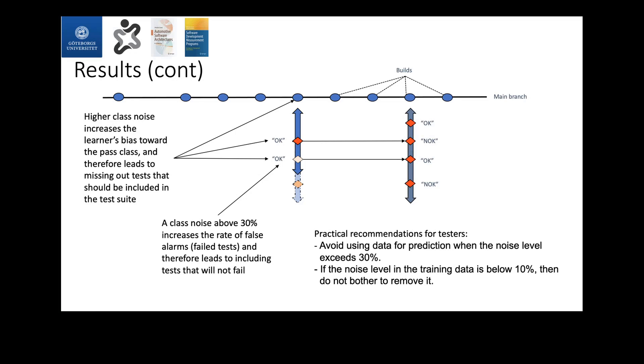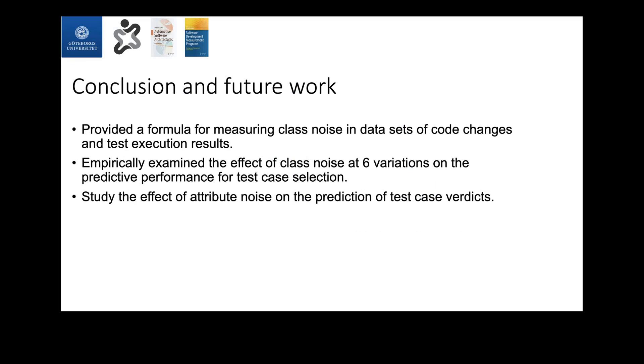As practical recommendations for testers who want to use the method, we recommend them to check or at least not use the data for test case selection unless class noise is handled or unless class noise was below 30 percent. And if it was above that, then they need to handle the noise beforehand. And if the noise level was below 10 percent, then probably don't need to bother about handling class noise in the data. In conclusion, we did provide this formula for calculating noise in the data, which can help testers to estimate the efforts required and the impact that class noise can have at various levels on the prediction of test cases using our approach.